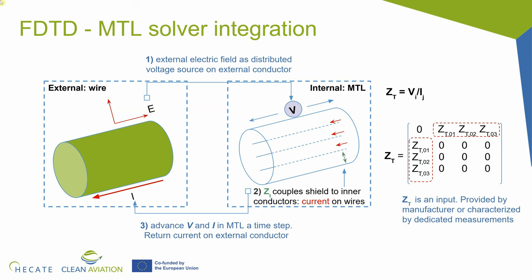For example, if you have a coaxial, this transfer impedance is a characteristic of the shield of the coaxial. It depends on the material, on the way it's braided, if it has holes or not. What is the shape of this matrix? In the case where we have four conductors — the shield outside and three conductors inside — it's going to be a 4 by 4 matrix. Since this transfer impedance relates the wires from different levels — from the outside to the inside — the diagonal entries are going to be zero; there is no transfer impedance between a level and itself. This is why we have three components that represent the coupling from the outside to the three wires inside, and three components representing the coupling from the wires inside to the wires inside, because the shield is bi-directional.